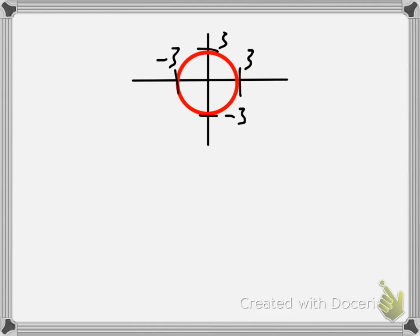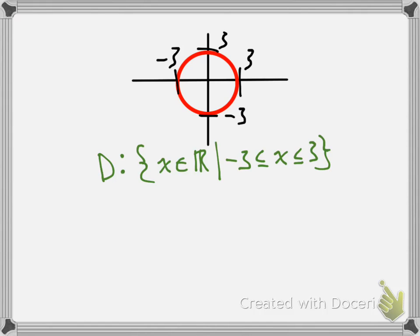Let's take a look at one more example — a circle. The thing with a circle is that you're going to have only a specific range of values for your domain and for your range as well. We still have an infinite number of points, but this circle goes from negative 3 to positive 3 on the x-axis. So we write the set of x values which are elements of the real number system, but since we range from negative 3 to positive 3 we need a condition: negative 3 ≤ x ≤ 3, which is a quick way of saying all possible x values between negative 3 and positive 3.